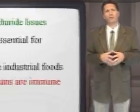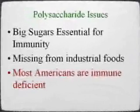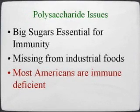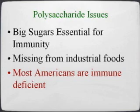We've discovered three critical issues with these large polysaccharides. First, many of these elements are critical to immune function. Second, our industrialized food supply largely lacks these nutrients. And third, these two factors combine to produce compromised immunity for a majority of Americans.